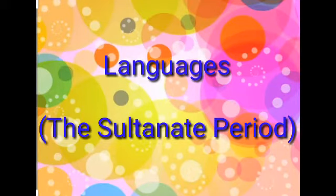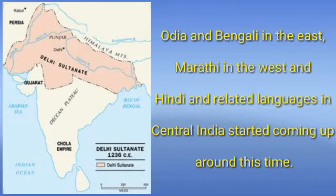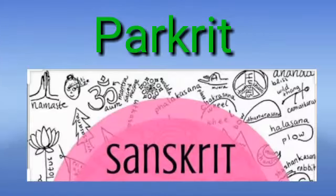Now let's see the languages that developed during the Sultanate period. Modern Indo-Aryan languages started emerging in the 9th and 10th centuries. Odia and Bengali in the east, Marathi in the west, and Hindi and related languages in central India started coming up around this time. They developed from Prakrit, which in turn had developed from Sanskrit. So Sanskrit is the mother of languages.